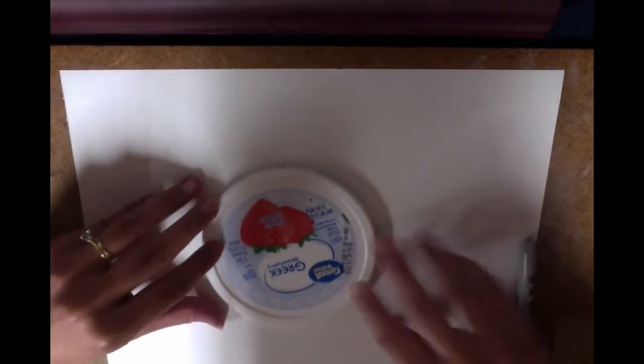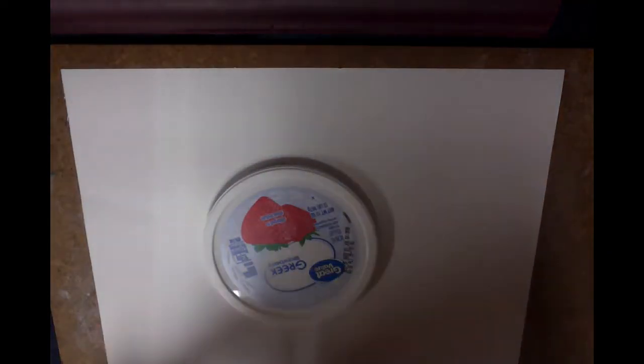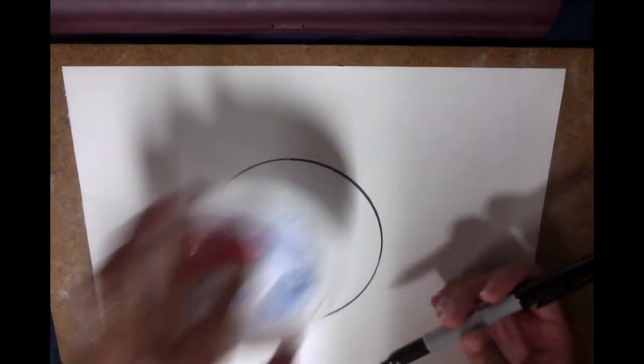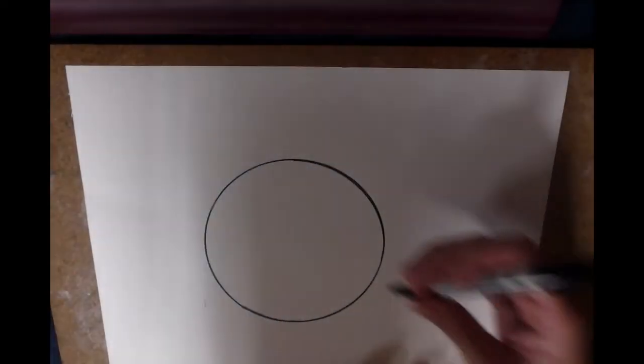For me, it's the lid from my container of yogurt, but if you can't find anything the right size or shape, that's okay. Just start by drawing a large circle. I'm just using Sharpie so you guys can see my lines. You can use whatever utensil you prefer.